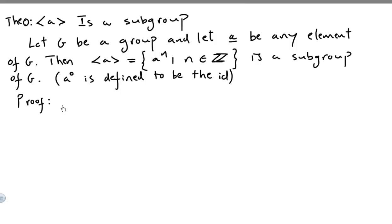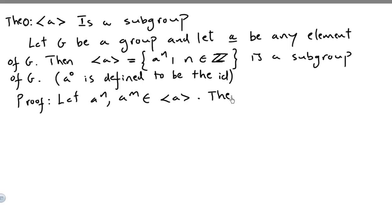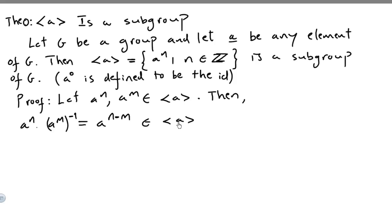The proof is really simple. Let A^n and A^m be elements from this set. Then A^n times (A^m)⁻¹ is A^(n−m), and of course this will be in the set.